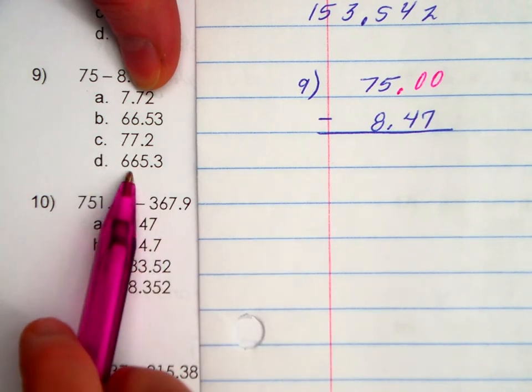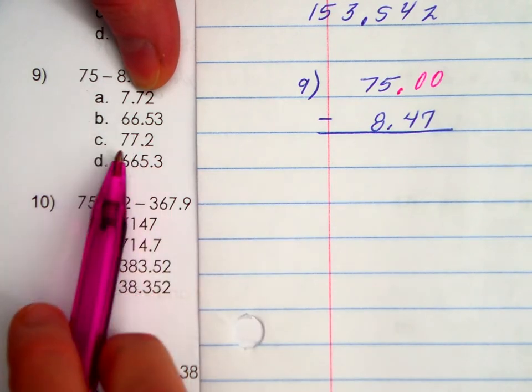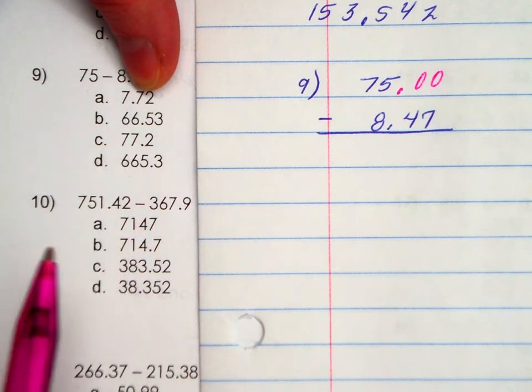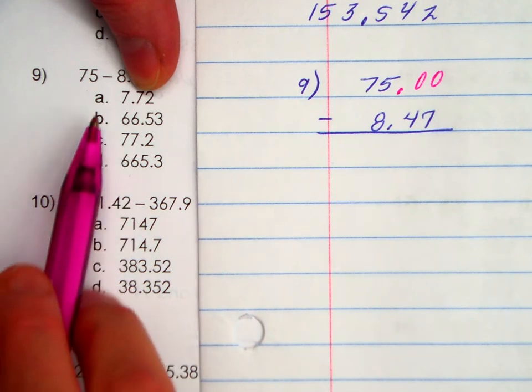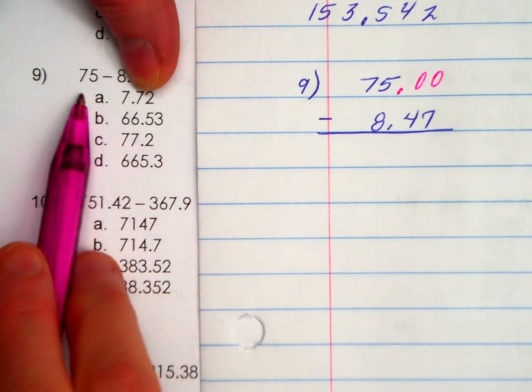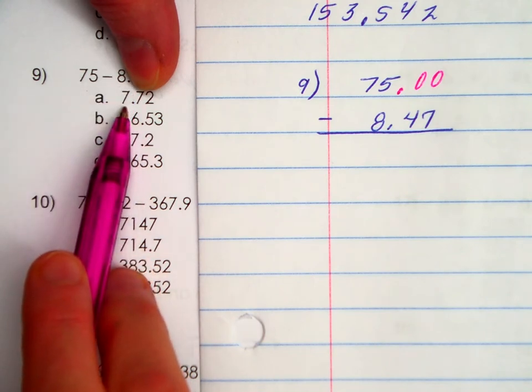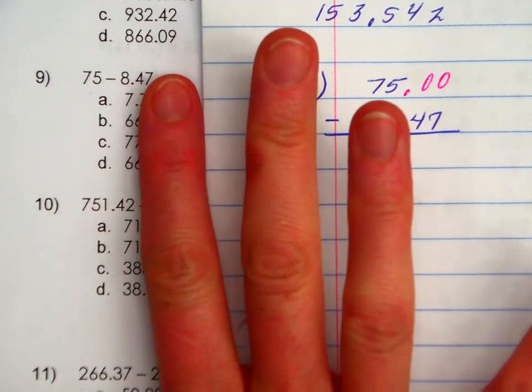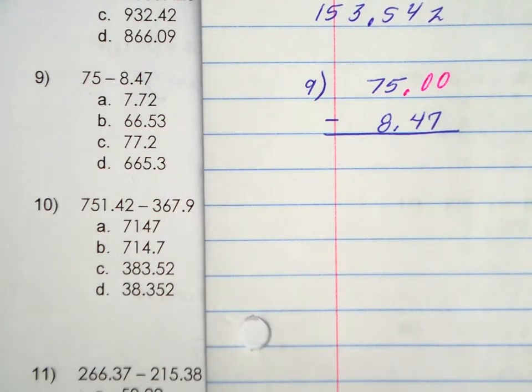75 take away 8, could it be 77? These are feeling not logical. 75 take away 8, could it be 66? 75 take away 8, is it going to be 7? If you look at just the whole number portion, you can narrow down your options. I predict the answer will be B.